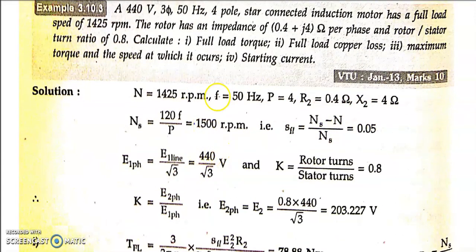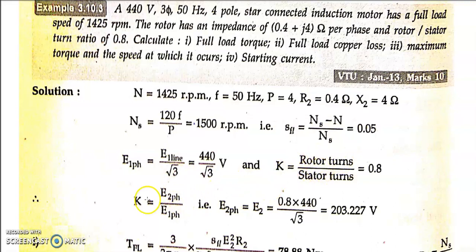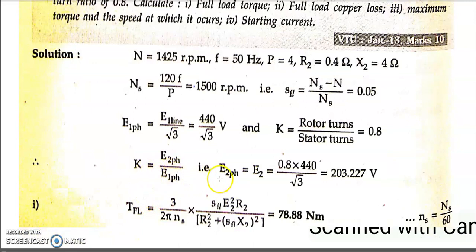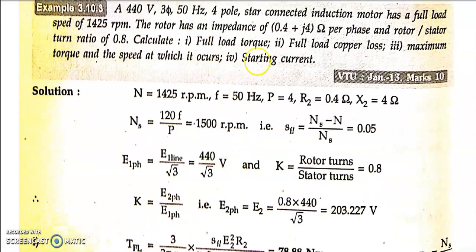Next, the stator voltage is 440V line voltage, so e1 phase = e1 line / √3 = 440/√3. The turns ratio k = n2/n1 = e2/e1 = 0.8. Using k = e2 phase / e1 phase, we get e2 phase = 0.8 × (440/√3) = 203.227 V.